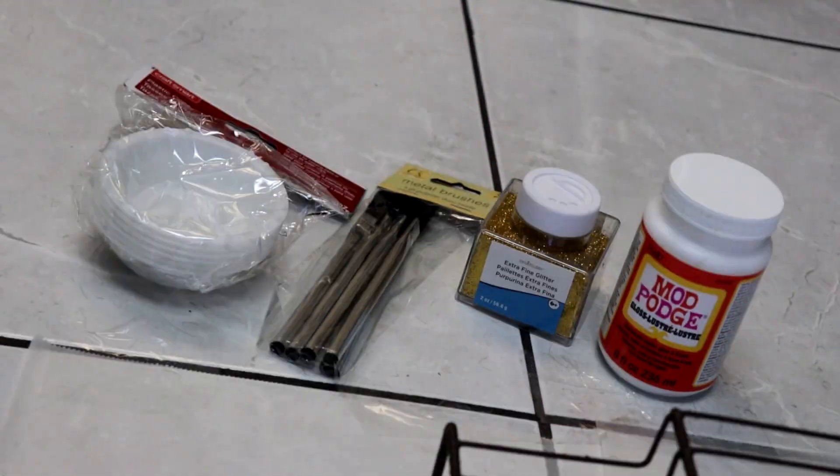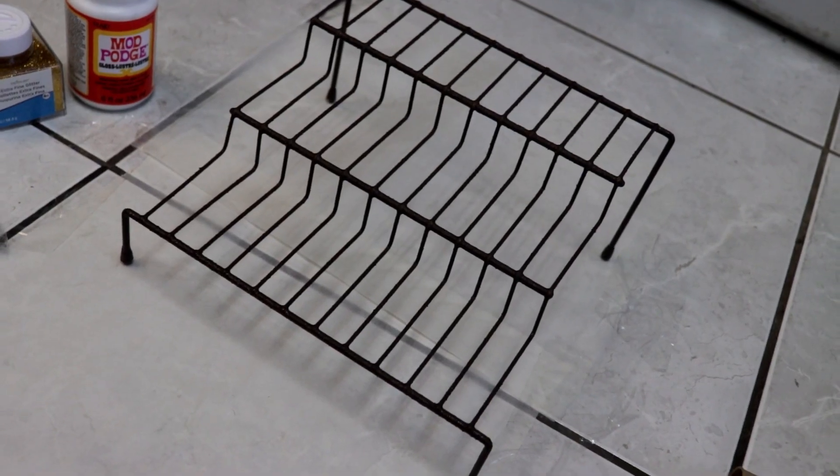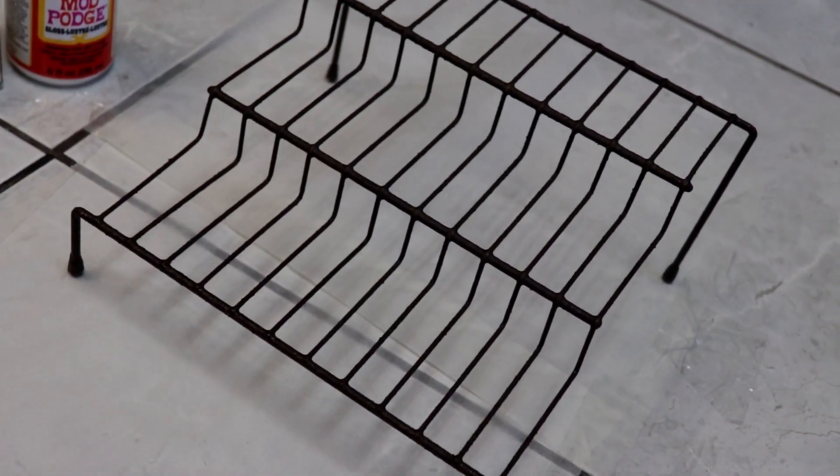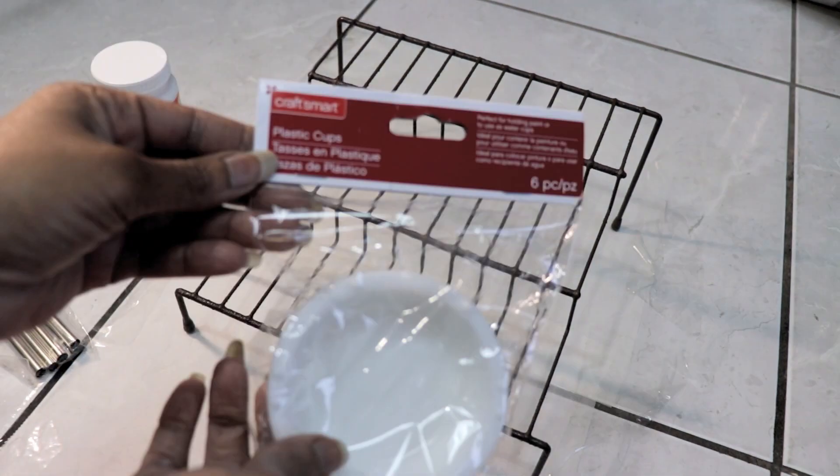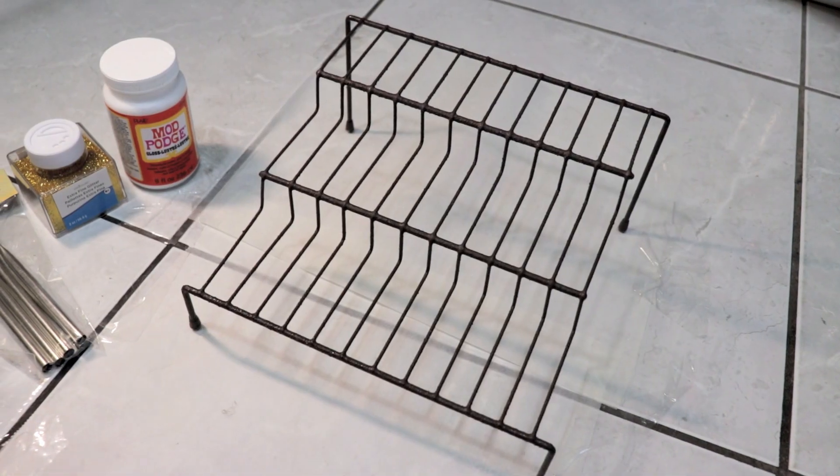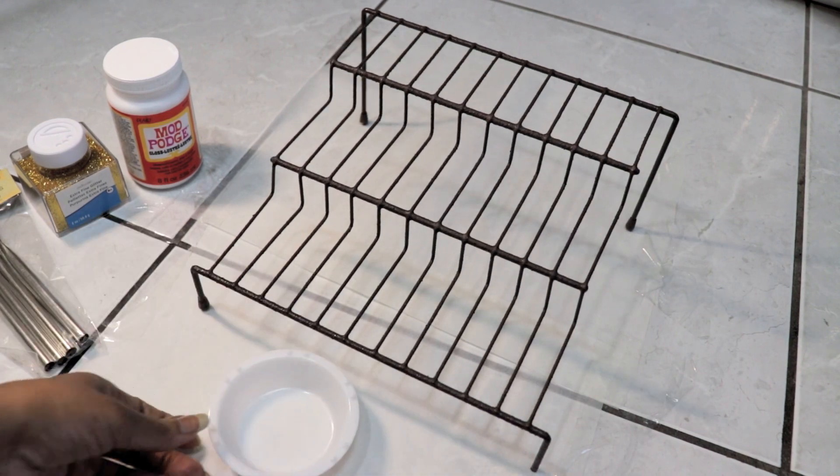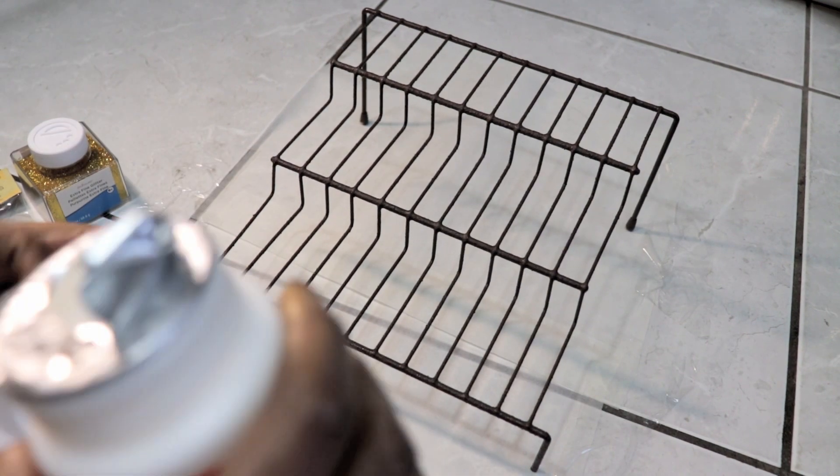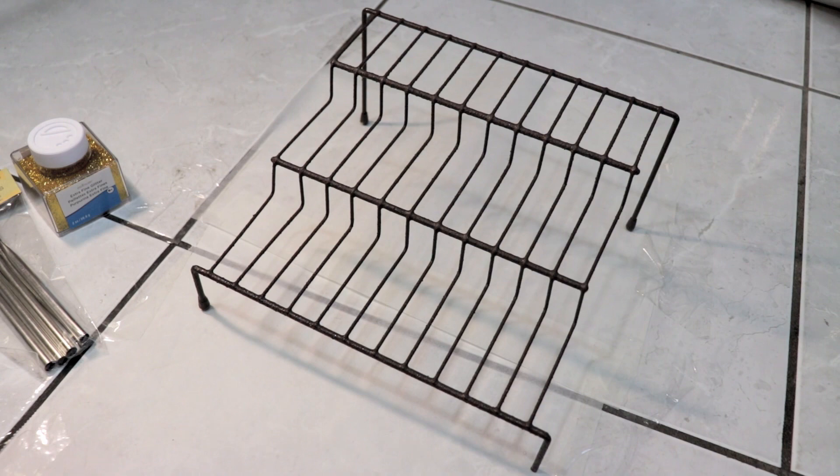To add some bling to the shelf, this is what you're going to need. I lined the floor with parchment paper and kept it tacked down with tape. First thing you're going to do is grab your plastic cups.